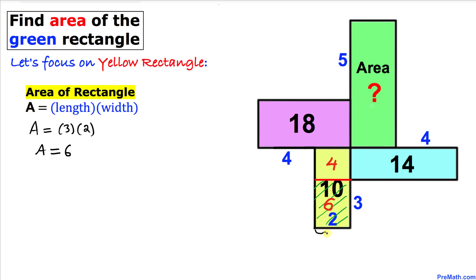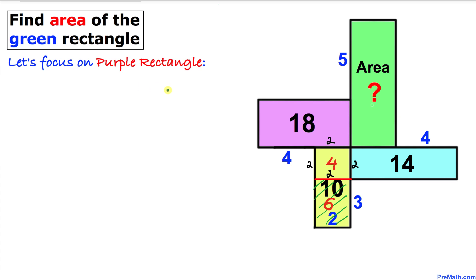We know this side length is two, so this side length is two as well. Since the area of the unshaded part is four, and two times two equals four, this other side length is two. So all these sides are two as well.